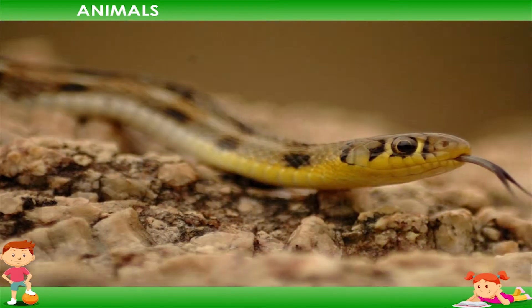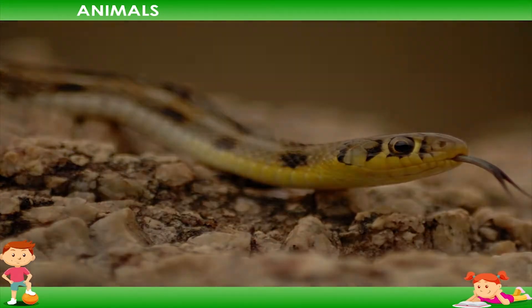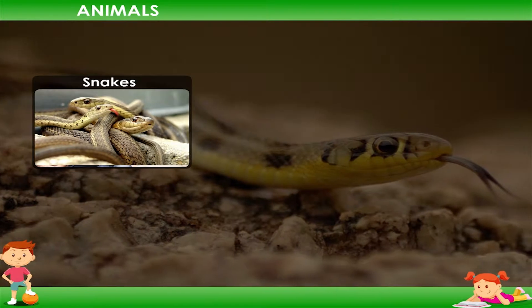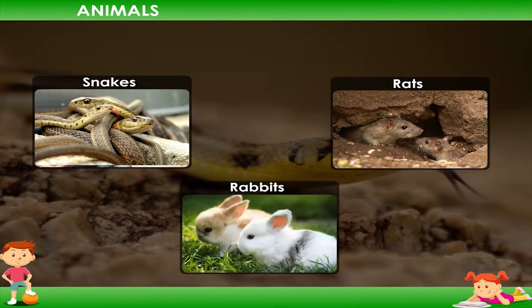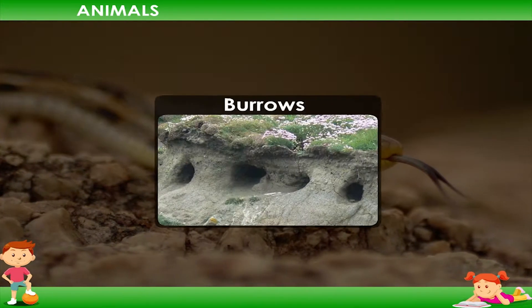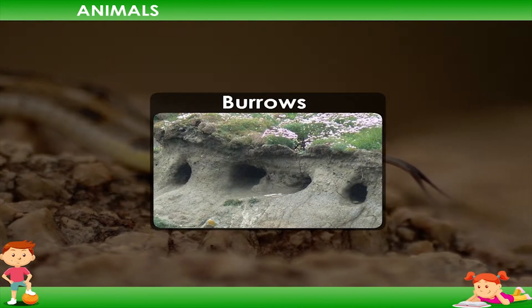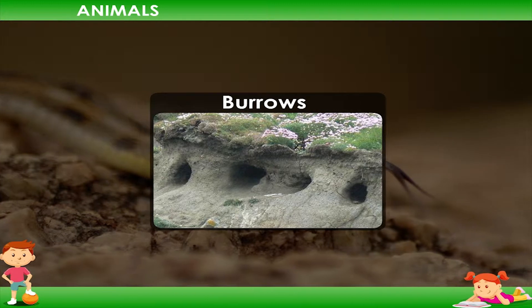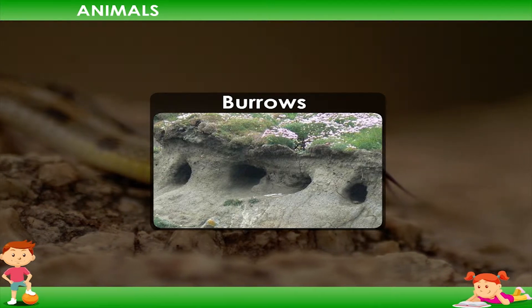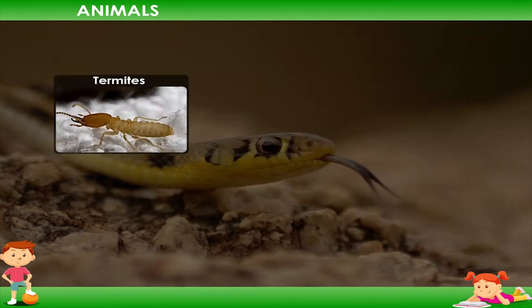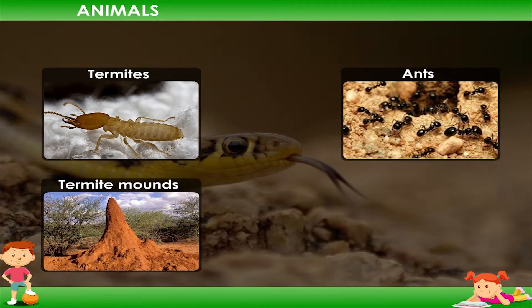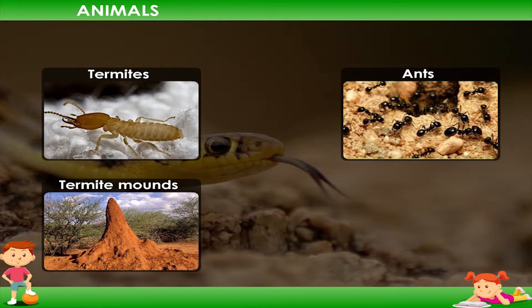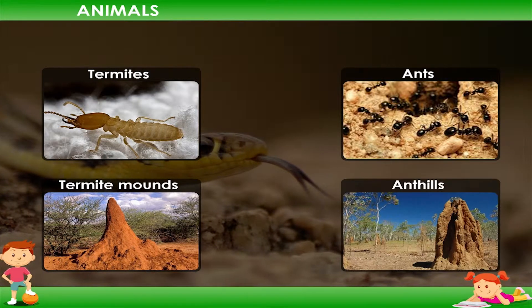Some animals such as snakes, rats, rabbits etc. make burrows or holes in the ground to live. Termites and ants make termite mounds and anthills.